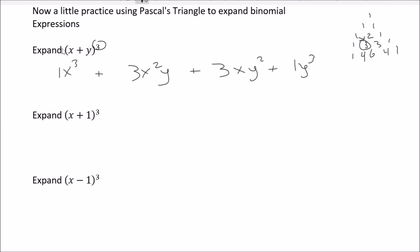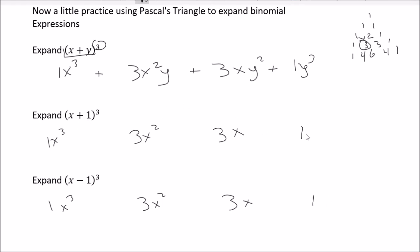Now let's see what happens with a number and with a minus sign. For x plus 1 cubed and x minus 1 cubed, the coefficients are still 1, 3, 3, 1 — same row. The x's work the same way: x cubed, x squared, x, nothing. For x plus 1 cubed, the 1s are 1 cubed, 1 squared, 1 — multiplying by 1 does nothing, so we get x cubed plus 3x squared plus 3x plus 1.